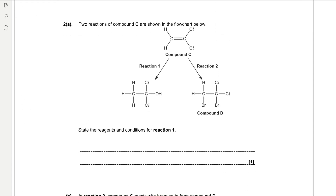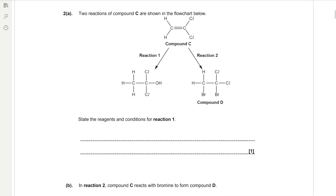Question 2a. Two reactions of compound C are shown in the flowchart below. In reaction 1, compound C forms an alcohol by adding an alcohol group on. In reaction 2, compound C is reacting with bromine. State the reagents and conditions for reaction 1. When forming an alcohol from an alkene, we need to use steam and an acid catalyst such as phosphoric acid — you could also say sulfuric acid.